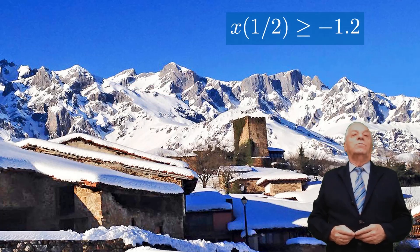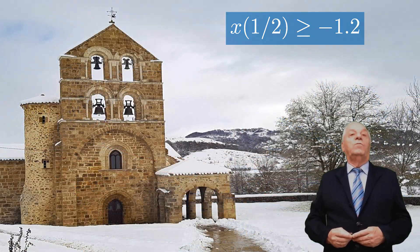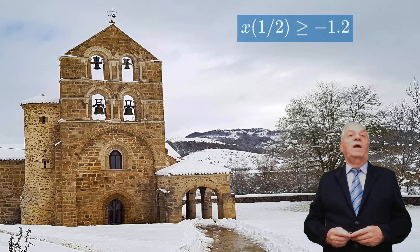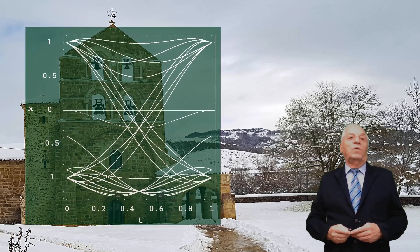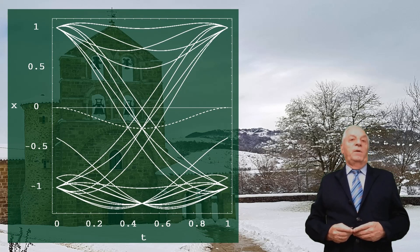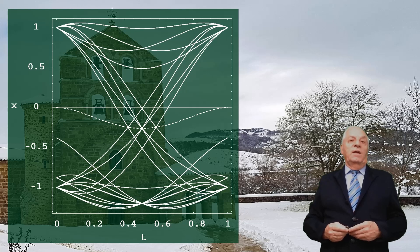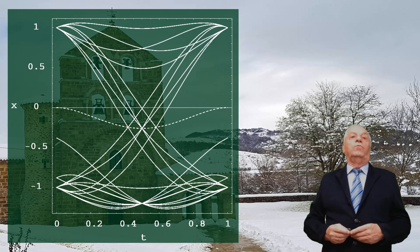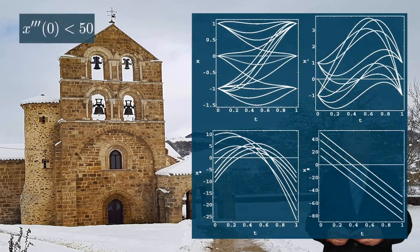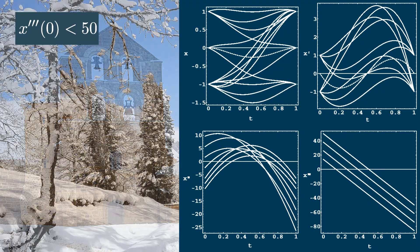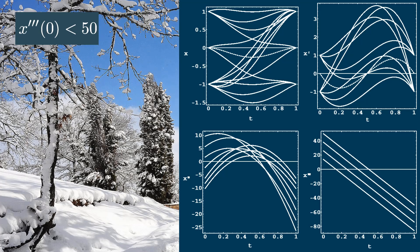If an extra constraint is added consisting of limiting the deflection of the beam to −1.2 at t=1/2 — that is, x(1/2) ≥ −1.2 — Figure 2 shows the 21 generators of the new polytope of solutions and the particular solution Cp(t) as the dotted line. It illustrates the 21 generators of the polytope of all solutions and a particular case (dotted line) when the deflection of the beam at t=1/2 is limited to −1.2.